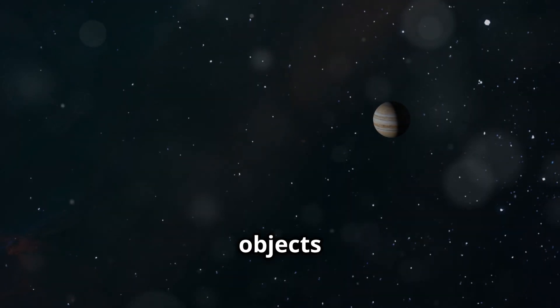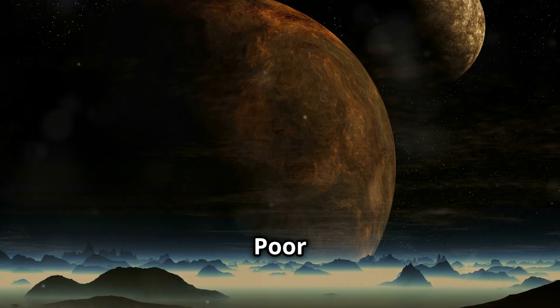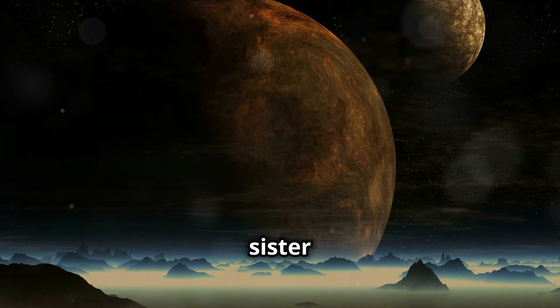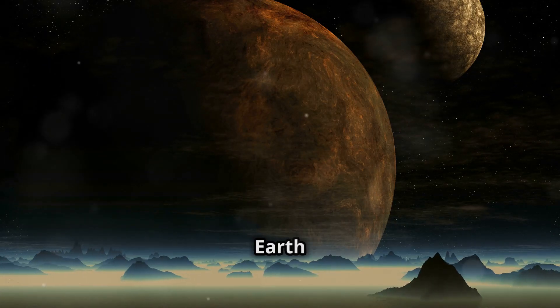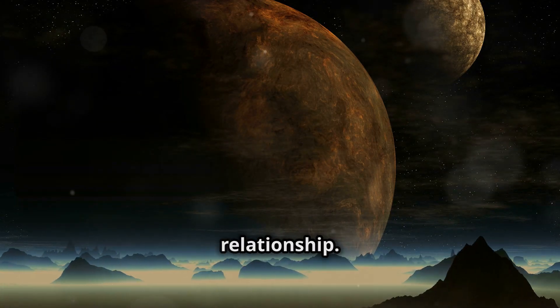Venus is one of the brightest objects in our night sky. Poor Earth would miss its planetary sister very much. Venus and Earth have a unique gravitational relationship.